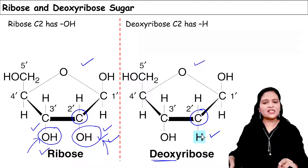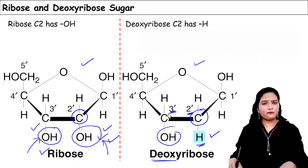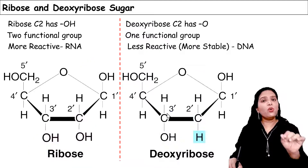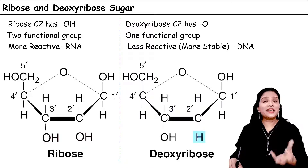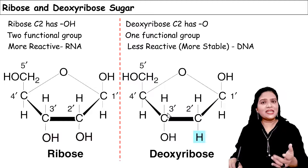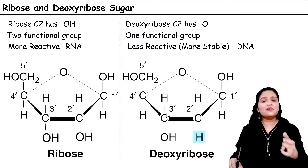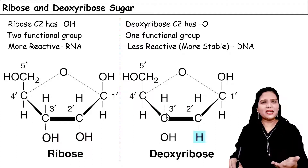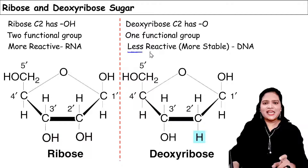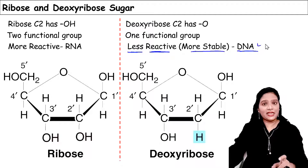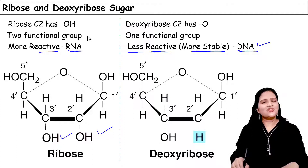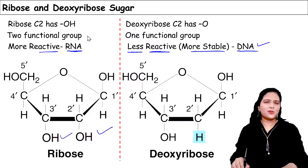DNA has only one hydroxyl group at the third carbon; at the second carbon there is only hydrogen. This makes DNA less functional but more stable. Since the genetic material must carry information from one generation to the next without frequent changes or mutations, DNA's lower reactivity and greater stability make it suitable as genetic material, whereas RNA, being more reactive with two functional groups, is generally not the genetic material.